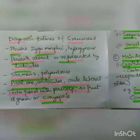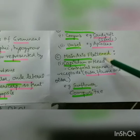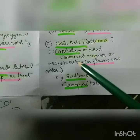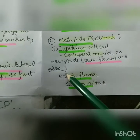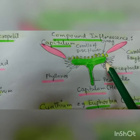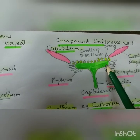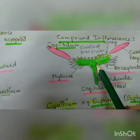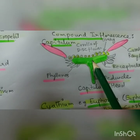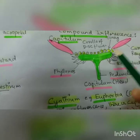The third type is where the main axis is flattened. The first example is capitulum, also called head. Flowers are arranged in a centripetal manner on the receptacle; the outer flowers are older. Here the receptacle is flattened and the arrangement is centripetal. It is seen in sunflower and the most prominent members of Compositae. It has two types of flowers - disc floret and ray floret.